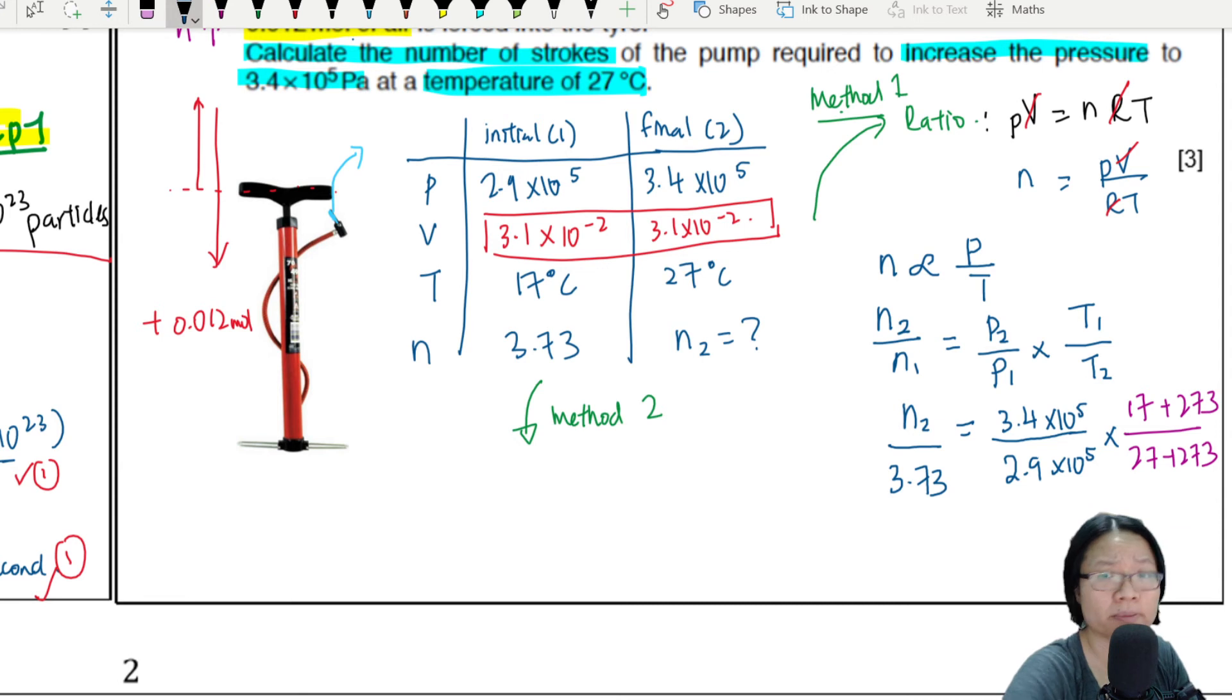All right, so now I'm going to press my calculator and get my n2. And yeah, I just cancel off the 10 to the power of 5.